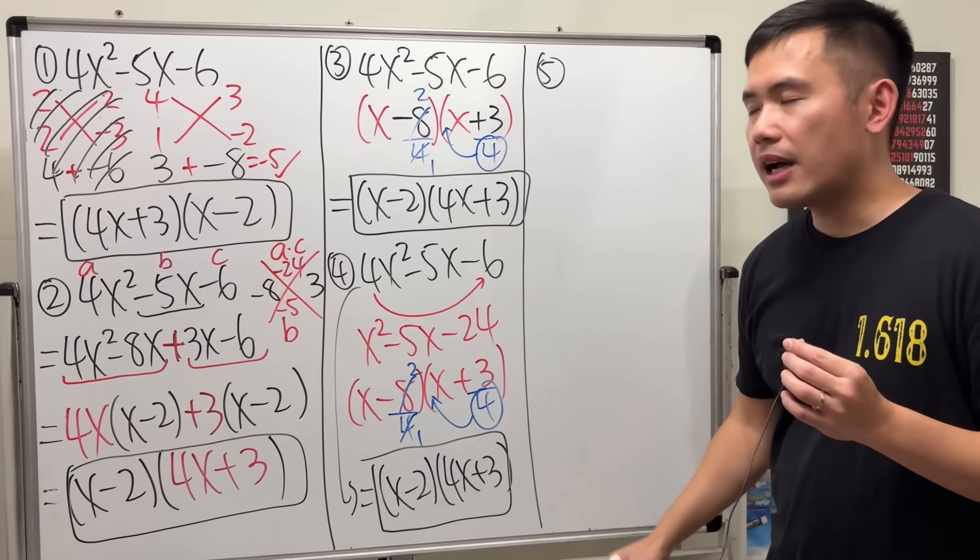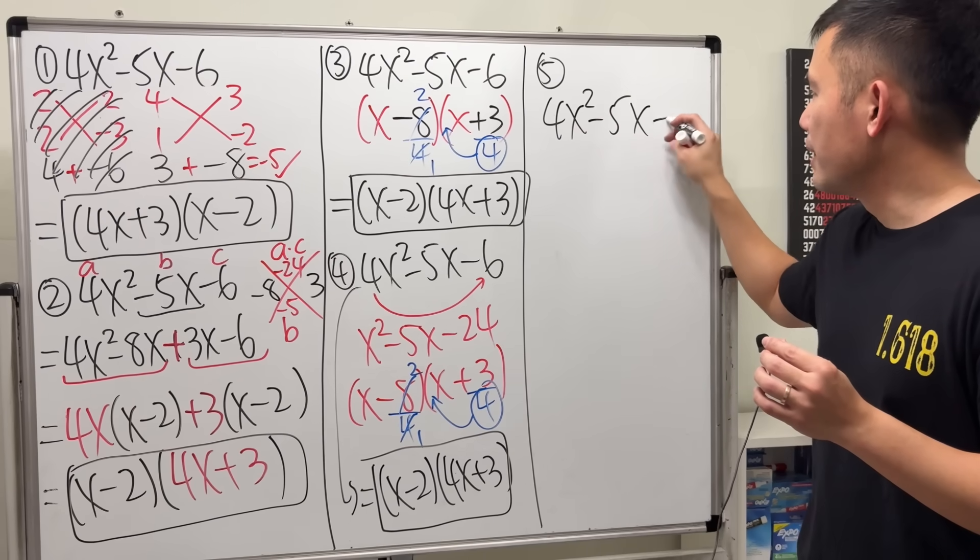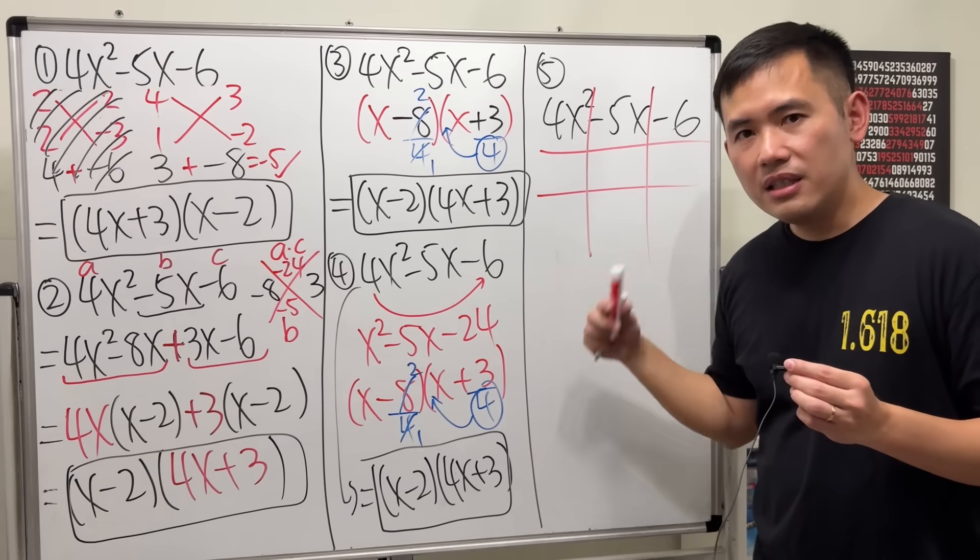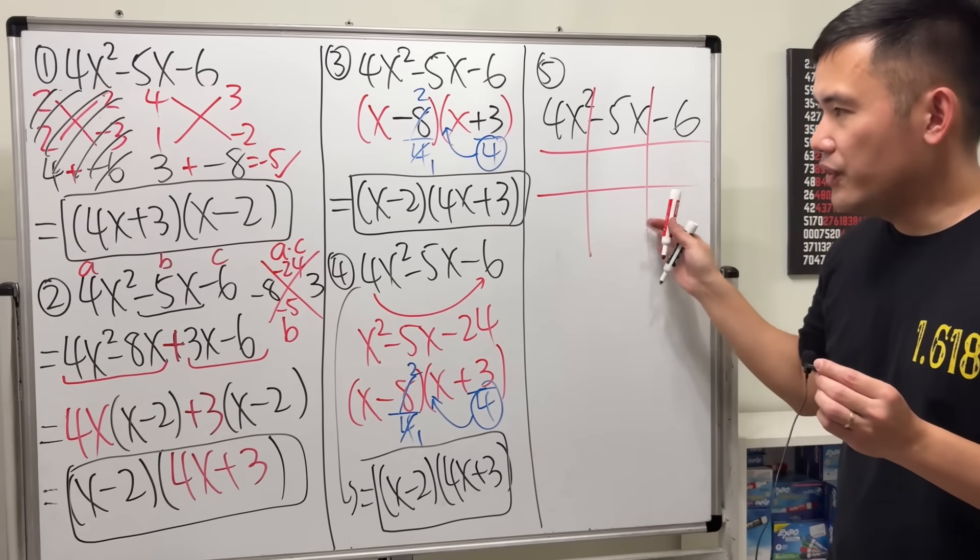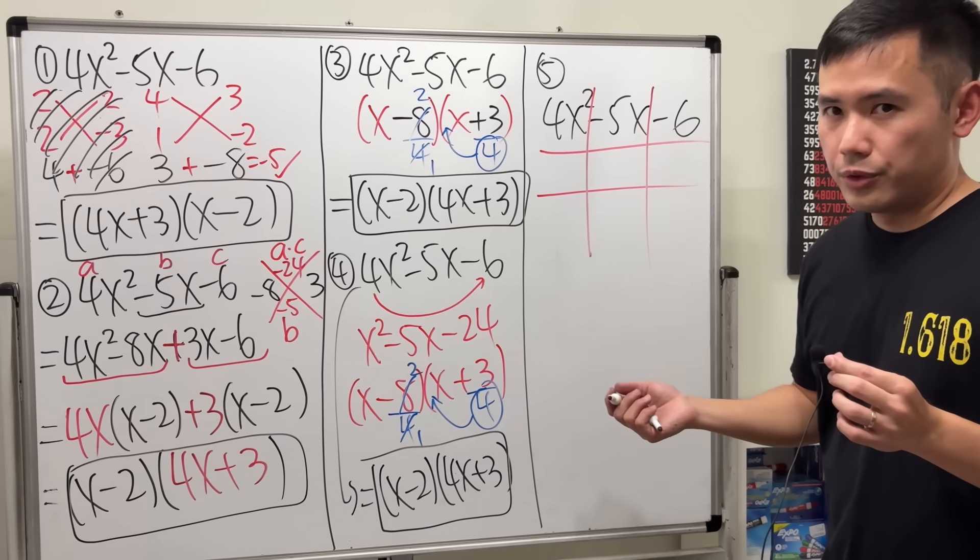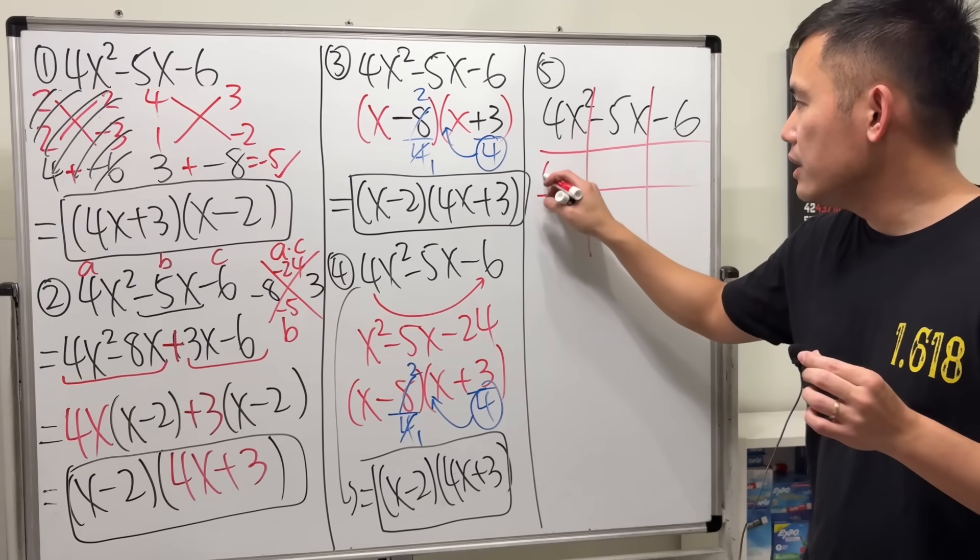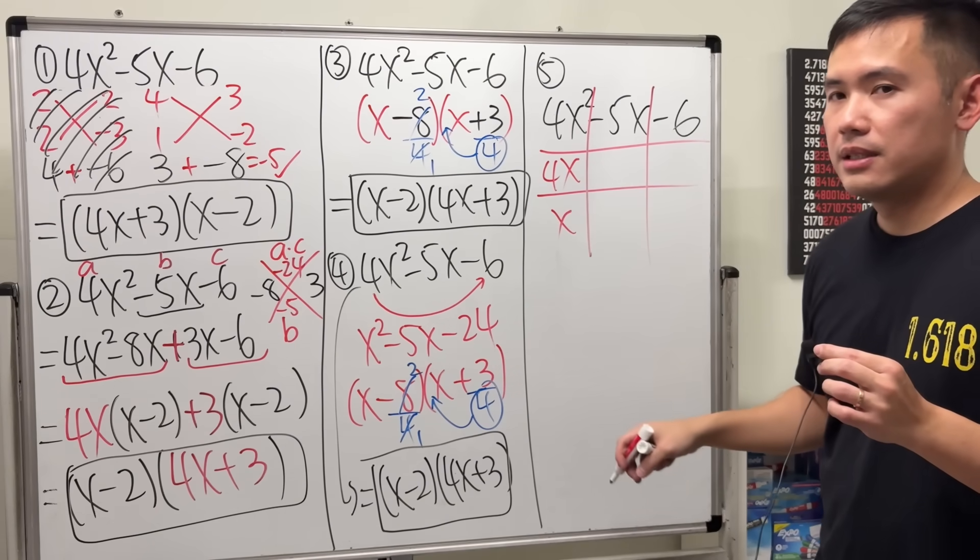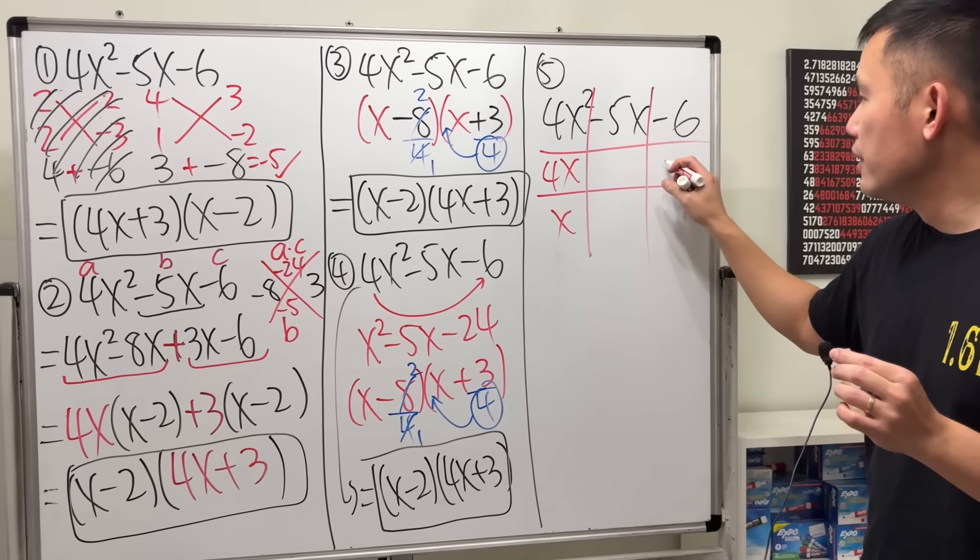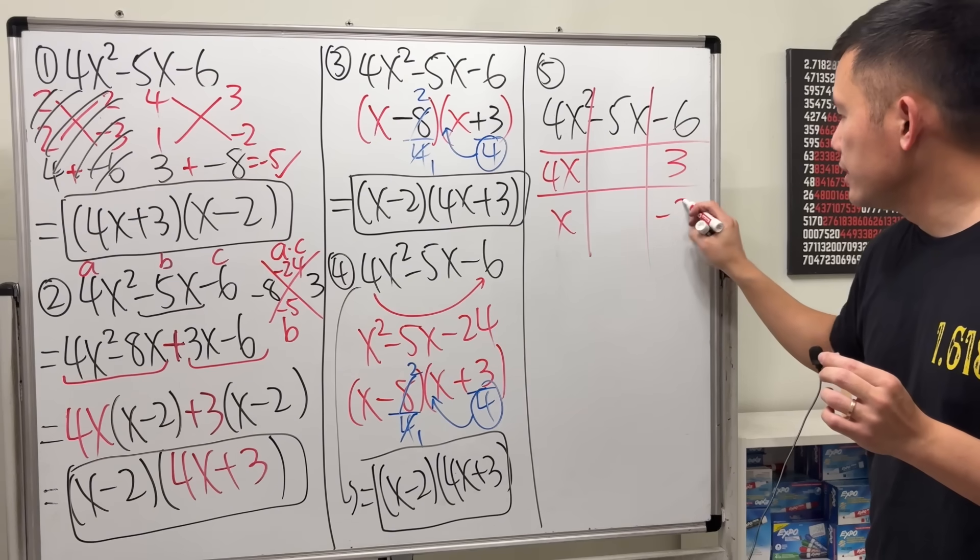Here, we have 4x squared minus 5x minus 6. You begin by drawing the tic-tac-toe boxes. And this is my go-to way, even in my videos, to show people how to factor it. So, what do we do? You ask yourself, what times what gives us 4x squared? We need 4x times x. Come here. What times what gives us negative 6? We need 3 and negative 2. And remember the order matters. We need 3 here and negative 2 here.